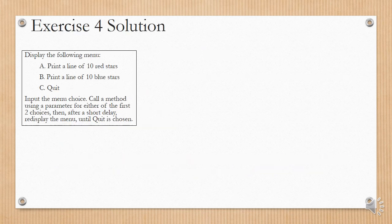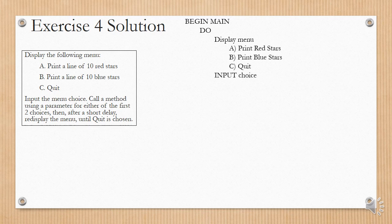Let's go to the solution. We're going to do it with a method. As they said, they want you to call a method, so we have the main part of the program where we'll call the method from is begin main. Then we're going to do a do while loop to redisplay the menu again and again until the person chooses C for quit. In the do while, we first display the menu. Then we input the choice. And then we do a switch case on the choice. A will be, we'll call the print stars method with red in brackets, B print stars with blue, and that will be the end of the switch case. And then we end the do while loop with, as long as the choice is not equal to C, we will repeat the do while loop. And that's the end of the main part of the program.